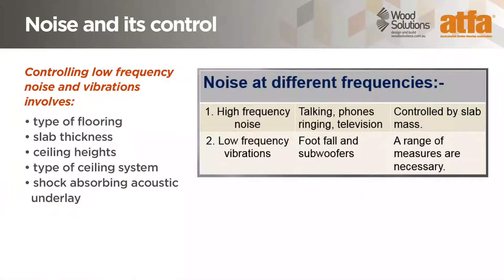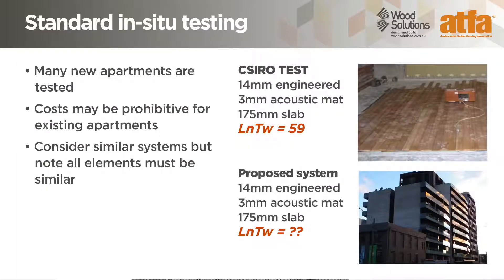To control low frequency noise and vibrations, we need to consider many factors: the type of flooring, the slab thickness, the ceiling height, the ceiling system, and whether there's any shock-absorbing acoustic underlay. The flooring and acoustic underlay are only two parts of the system. High frequency noises like phones ringing are generally quite easy to control through slab mass, but lower frequency vibrations are harder to manage and can require a combination of strategies, including specification of underlay and ceiling systems. Although most new apartments run standard acoustic tests, the test costs are often prohibitive for existing apartment owners. An alternative is to consider using results from a test with similar components, though they can often produce less reliable results. A thorough comparison of elements like slab thickness is essential to ensuring a successful system.